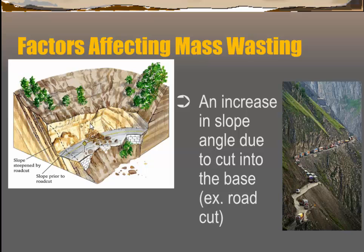Another factor affecting mass wasting is the increase of slope angle due to the base of the slope being cut. Here's a diagram of where somebody built a road and created a road cut — that slope is now much less stable than it was at its natural angle of repose, and you can see a landslide occurring. Here's another example in the Kashmir area of northern India and Pakistan, where a road cut through the mountains increases the chance of that slope coming down if a landslide is ever triggered.